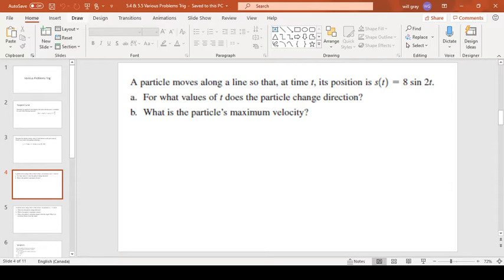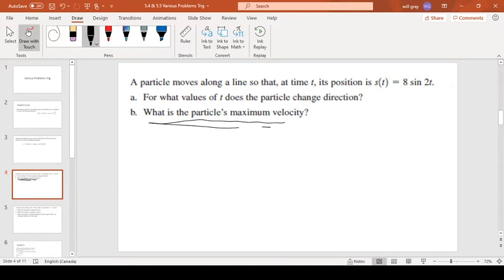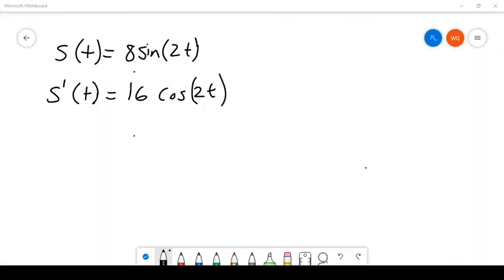Figure out what the particle's maximum velocity is. So that means what we're going to do is we're going to look at the velocity function, and we're going to try to make some conclusions from that velocity function. If you remember our initial position function was this function.